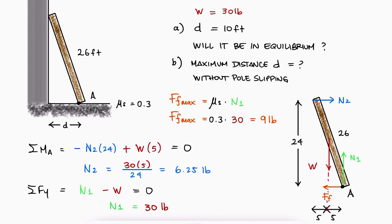Since the friction force can go up to 9 pounds and the pole is only being pushed horizontally with 6.25 pounds, we can conclude that the pole is in fact not sliding.